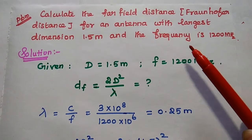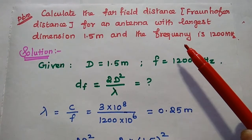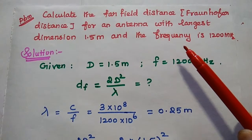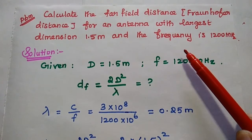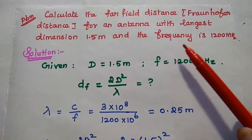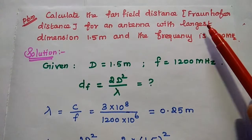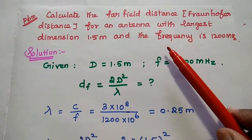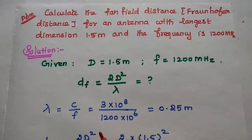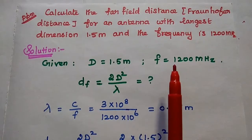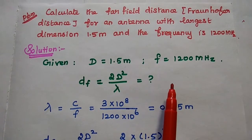Dear students, now we are going to solve important problems in far field distance in wireless communication. The first problem: calculate the far field distance, also known as Fraunhofer distance, for an antenna with largest dimension 1.5 meter and frequency 1200 MHz.